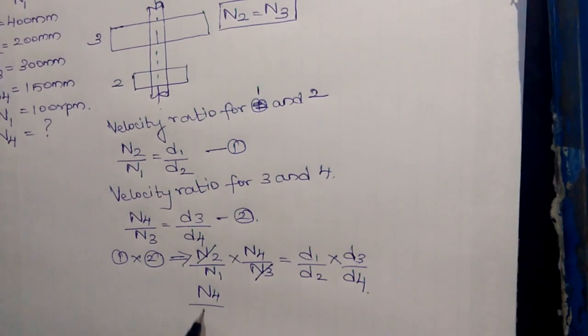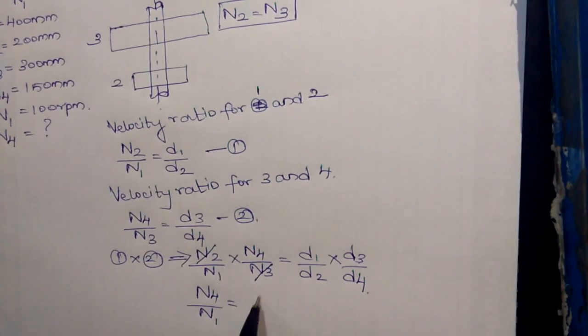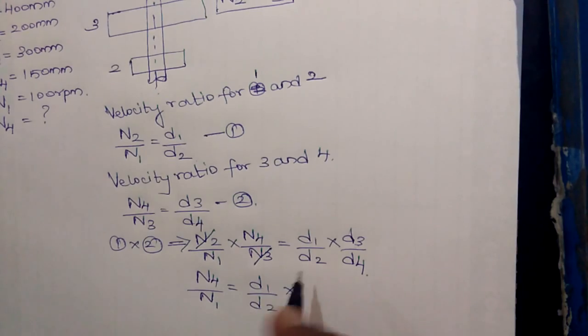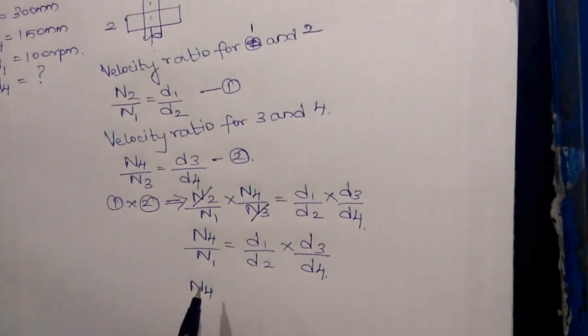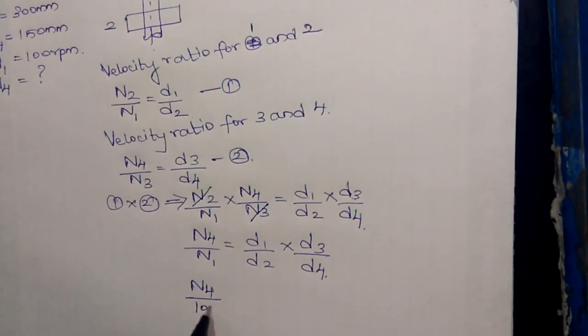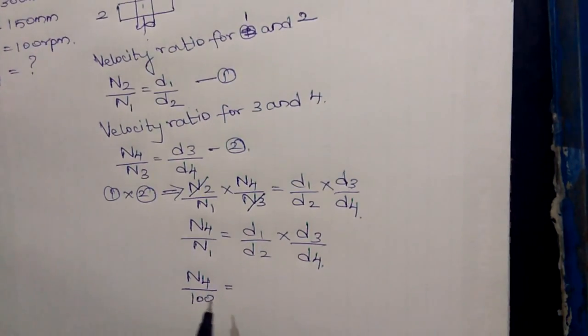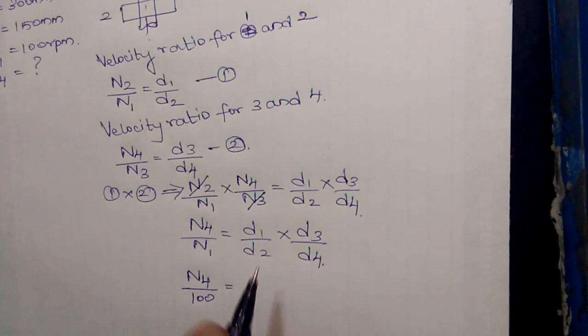Now n4 by n1 is equal to d1 by d2 into d3 by d4. So substituting the values in this equation gives speed of the follower pulley.